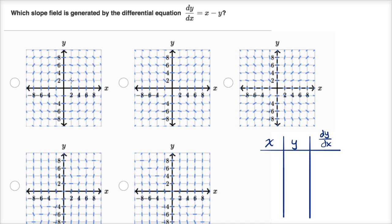I'm gonna have x, y, and then the derivative of y with respect to x. Let's think about when we're at this point right over here, when x is two and y is two. When x is two and y is two, the derivative of y with respect to x is going to be two minus two. It's going to be equal to zero.